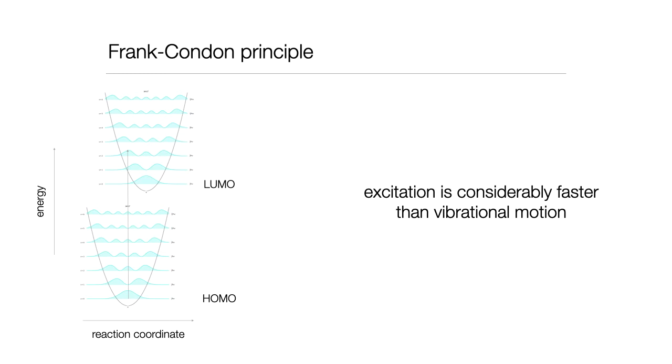And so this is essentially giving me the shape of my absorption spectra. The same thing happens in reverse, in emission. It all depends upon the shapes of my wave functions that I have.